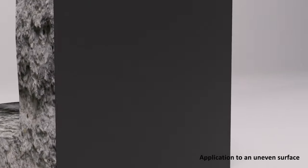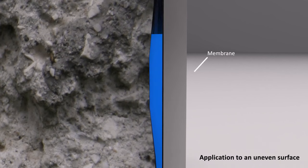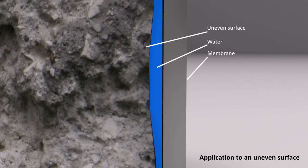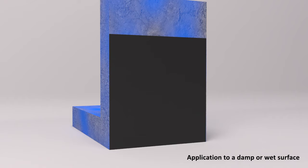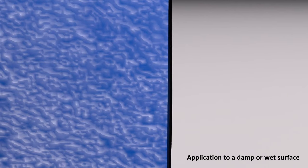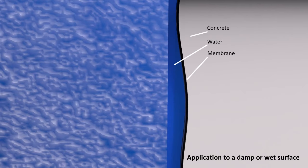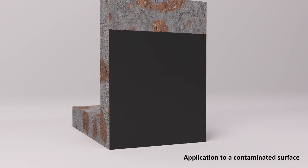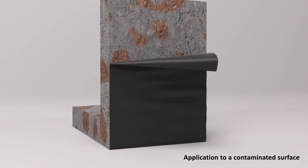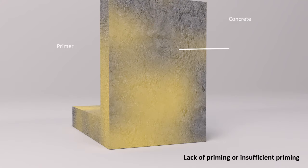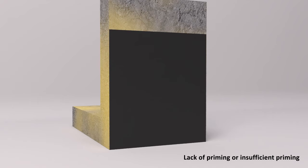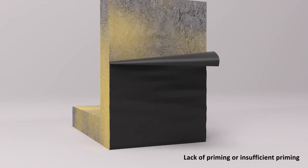Debonding can be caused by a number of factors including: application to an uneven surface, application to a damp or wet surface, application to a contaminated surface, and lack of priming or insufficient priming of the surface prior to installation of the waterproofing membrane.